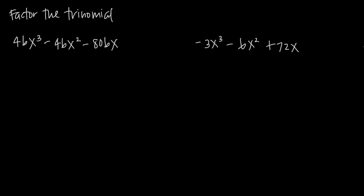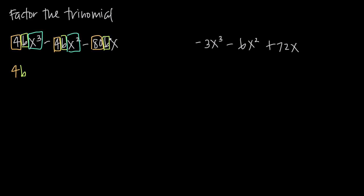The first thing we notice is that if we look at just these whole number coefficients on each term, we have 4, 4, and 80, so we can definitely take out a 4. And then if we start looking at the variables, we notice that we have b, b, and b, so because this factor is common to all three terms, we can definitely take out a b. And then looking at the x's, we have x cubed, x squared, and x, so we can take out 1x. 1x is common to all three of these terms, so that's going to be our greatest common factor.